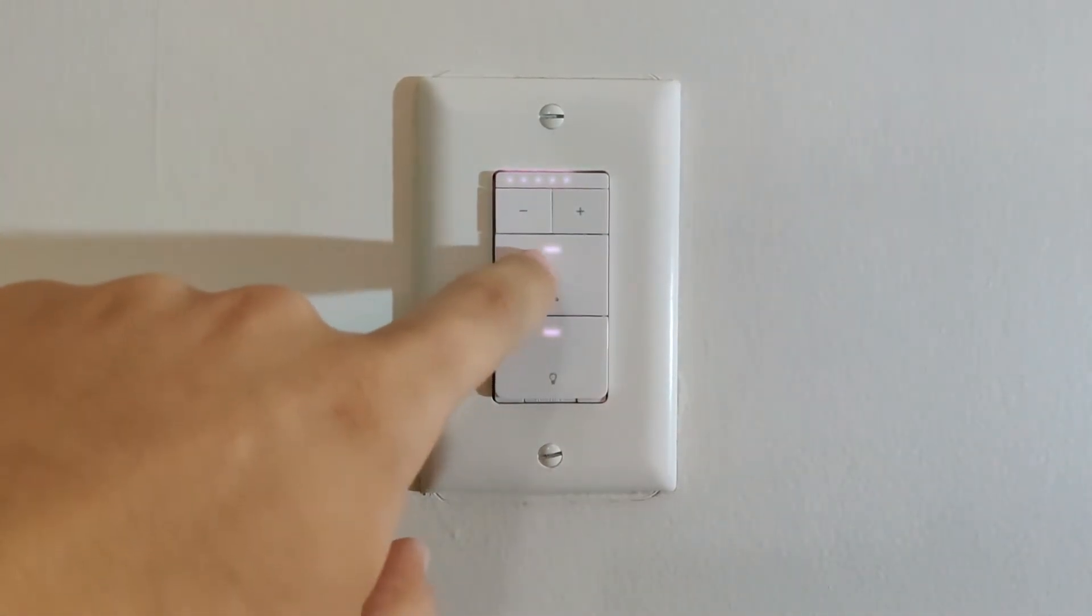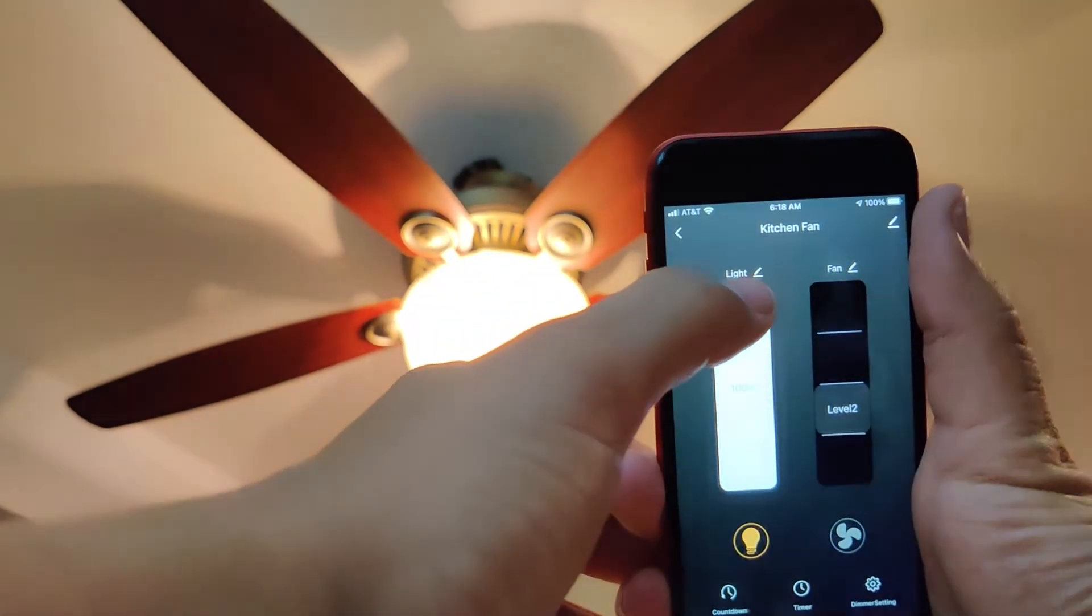As a quick side note, before you install your switch, set your fan speed to the highest setting by pulling the chain. That way when you're using the switch you'll be able to use the full range of speeds that your fan offers.